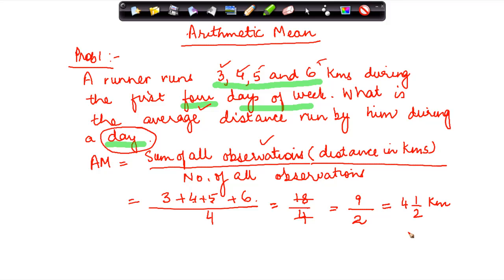So what is the average distance he runs during a particular day? It is the mean of all these numbers or the arithmetic mean which is 4 and a half kilometers.